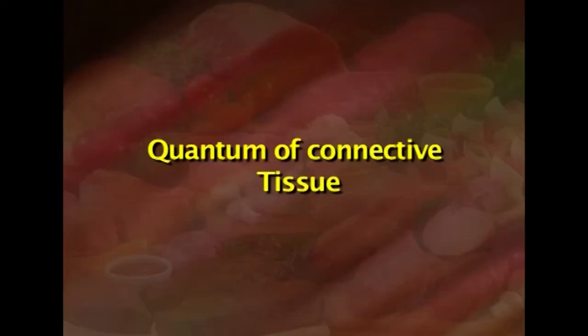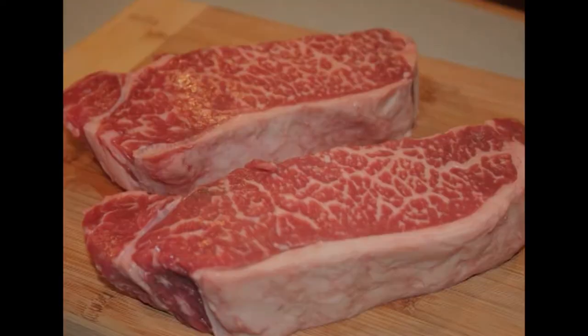Excess marbling neither enhances eating satisfaction nor is desired in a fat-conscious society. The next quality parameter is the quantum of connective tissue. The amount of connective tissue in meat has a direct bearing on its textural characteristics. The quantum of connective tissue per unit muscle does not increase with age and is not responsible for tough meat in older animals. Fresh meat with high water holding capacity shows good firmness and tight structure.